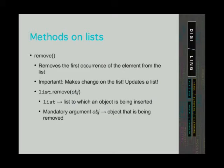The final method is the remove method. As you have probably guessed, the remove method removes the first occurrence of an object from the list—not all, but the first one. It takes one mandatory argument, and that is the element we are deleting. Like the other methods called on lists, the remove method also makes changes to the original list.